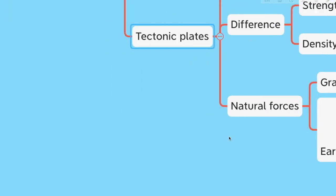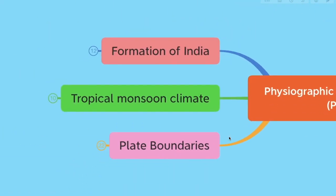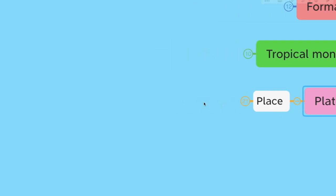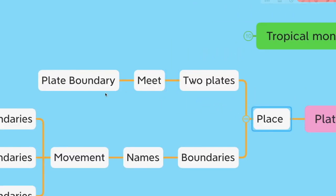The place where two plates meet is called a plate boundary. There are basically three types: convergent, divergent, and transform boundaries. When two plates come towards each other and crash into each other, they are called convergent plate boundaries. This process has led to the formation of the Himalayan mountains and the great northern plains.